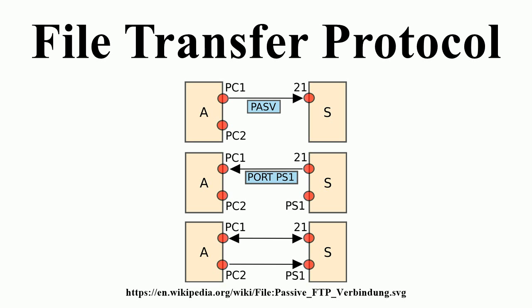The original specification for the File Transfer Protocol was written by Abhay Bhushan and published as RFC 114 on 16 April 1971. Until 1980, FTP ran on NCP, the predecessor of TCP/IP. The protocol was later replaced by a TCP/IP version, RFC 765 and RFC 959. Several proposed standards amend RFC 959; for example, RFC 2228 proposes security extensions and RFC 2428 adds support for IPv6 and defines a new type of passive mode.